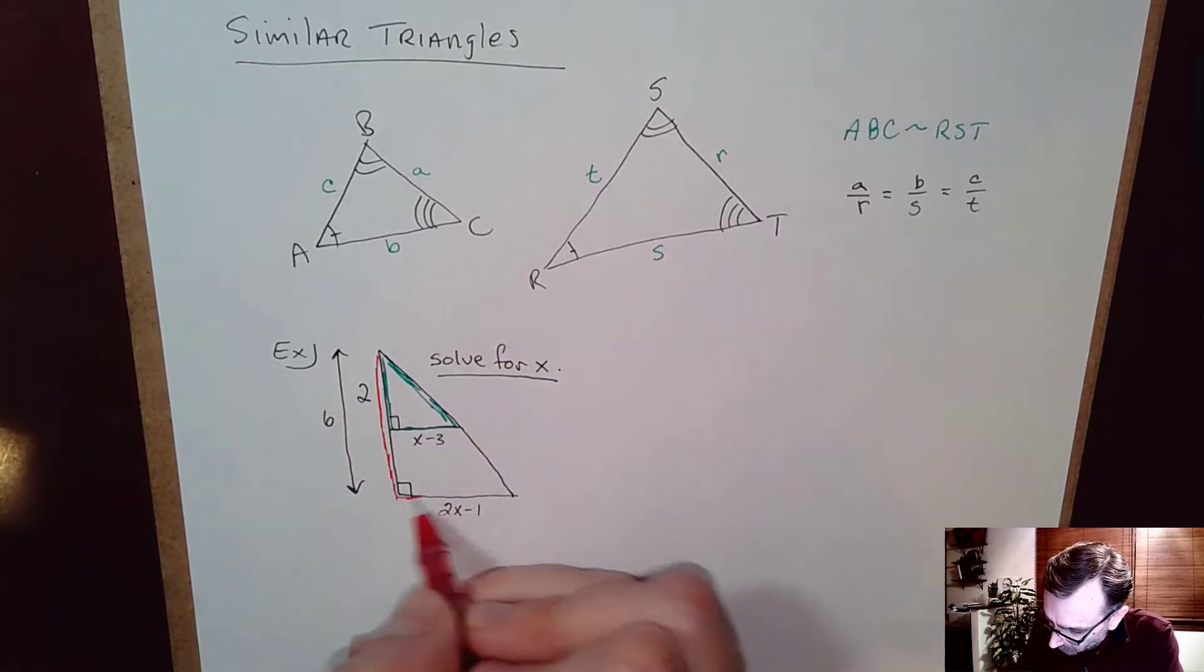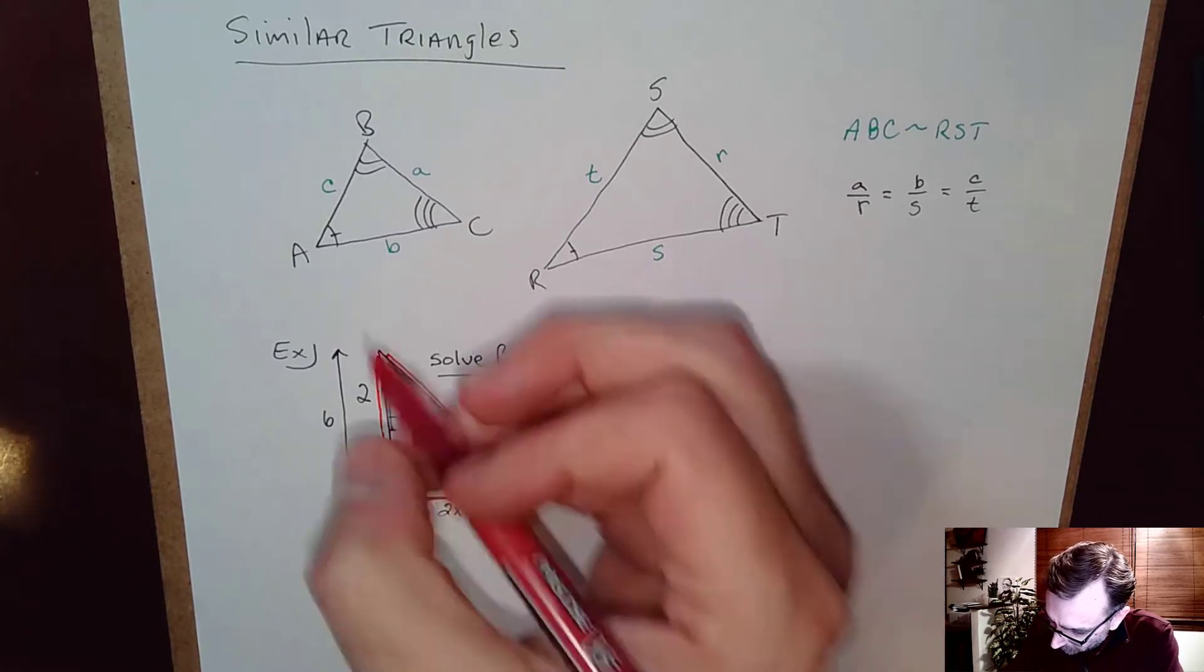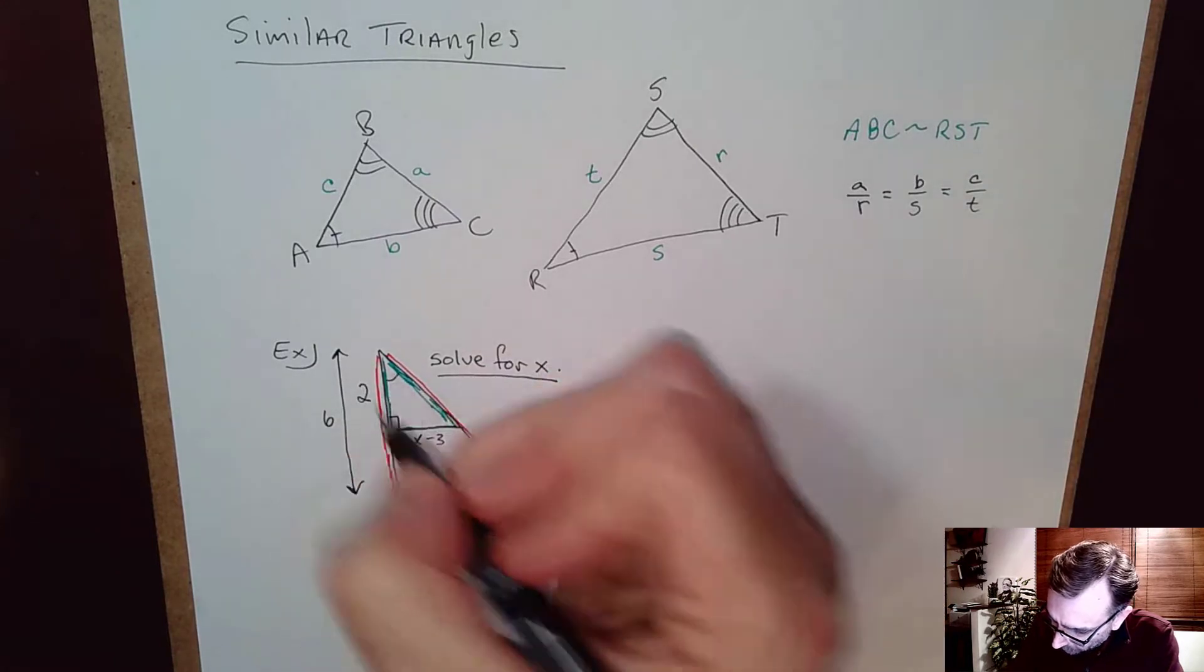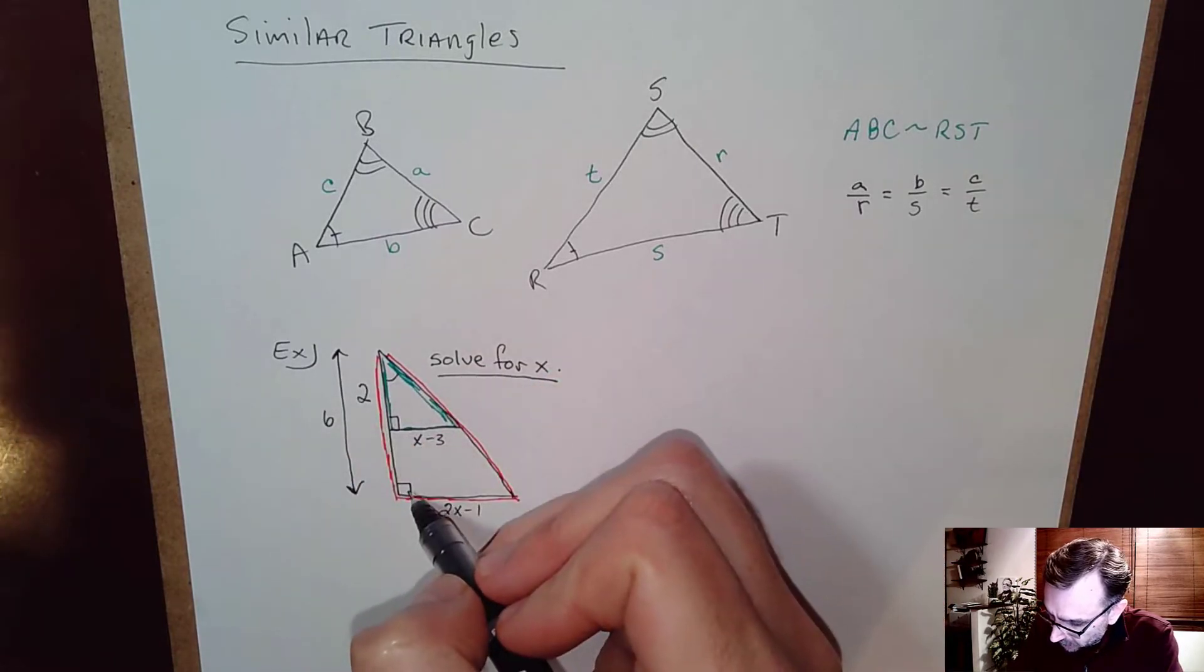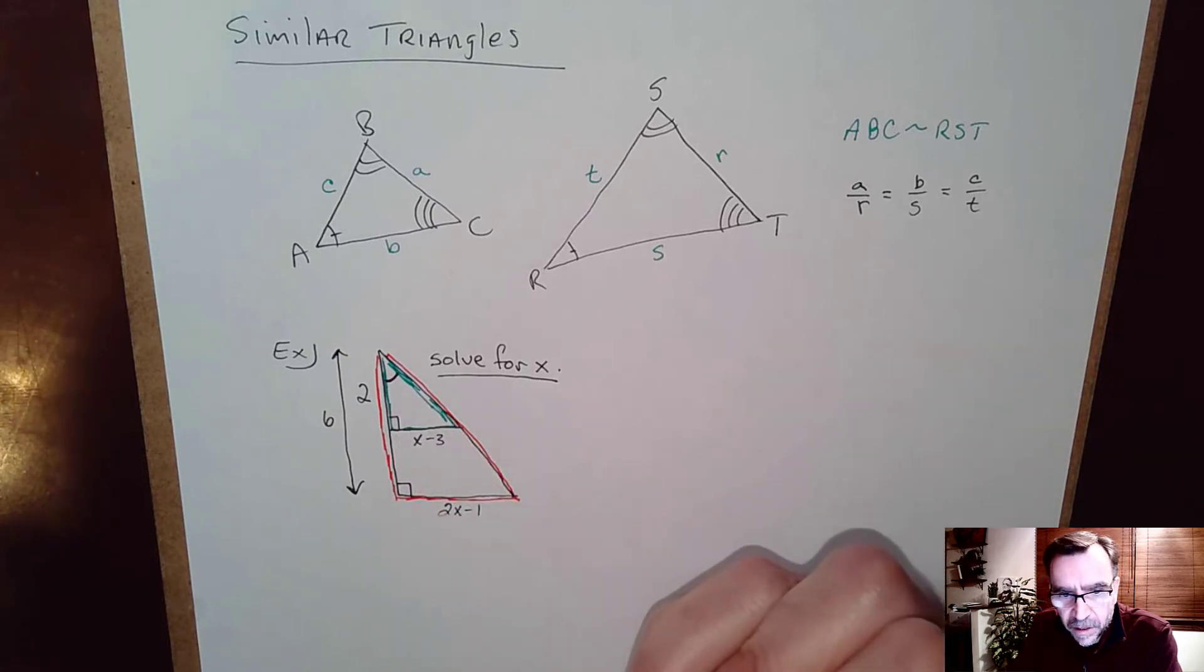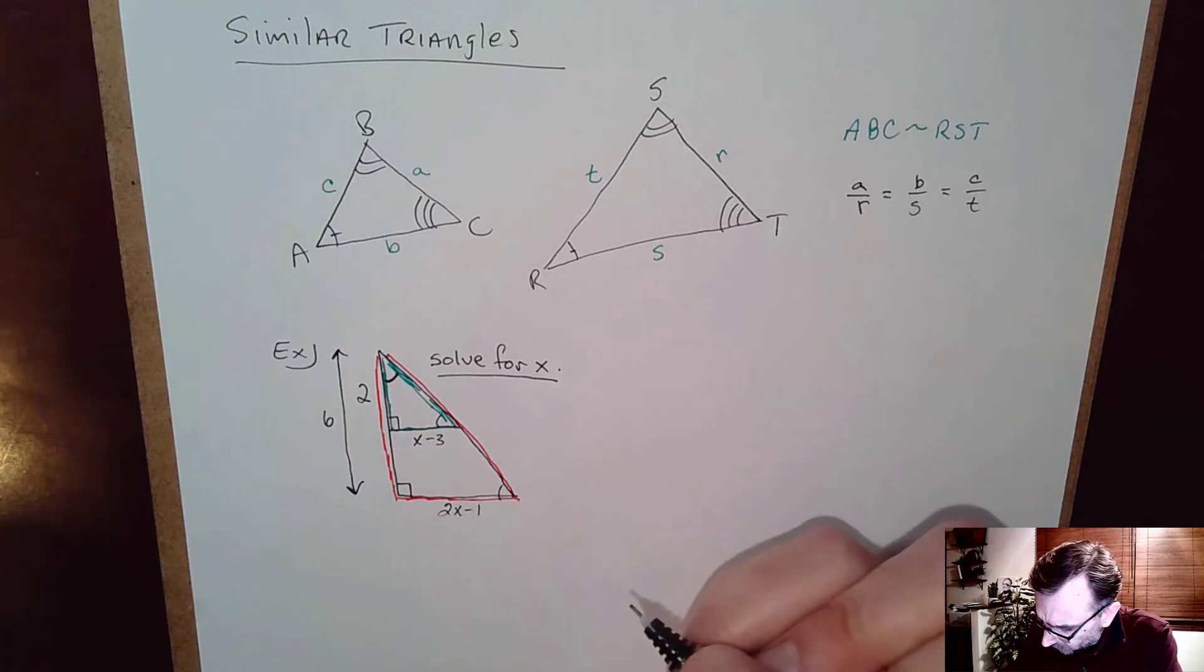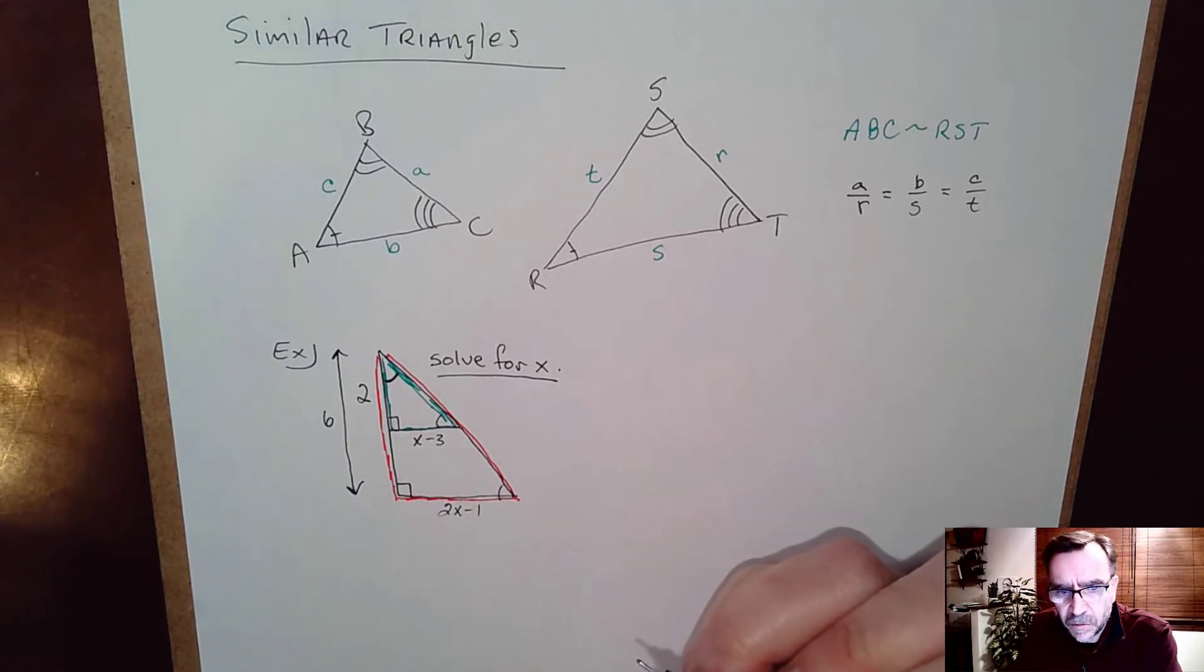Certainly you can see here they're both right triangles and they both share this angle right here. Okay so right away you know that they both have a 90 degree angle. This angle is the same for both of those, the red one and the green one. And since these lines are parallel we have these angles here are equal as well.